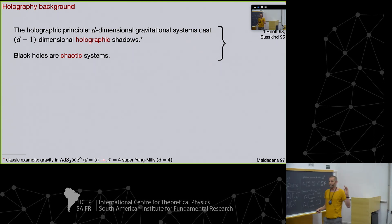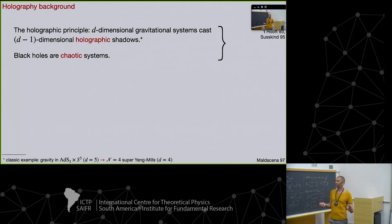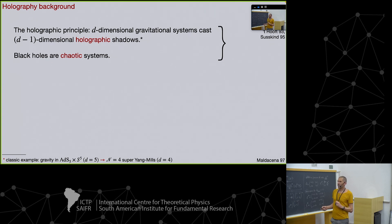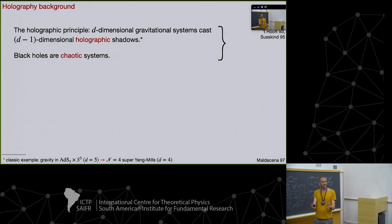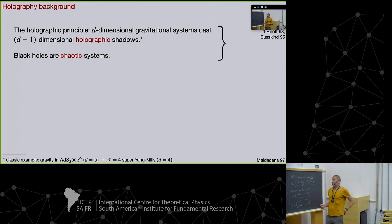Maldacena in 1997 introduced a worked example, where the gravitational theory was living in the product of a five-dimensional ADS-5 space and a five-dimensional sphere, and the corresponding boundary partner was a super Yang-Mills theory with N=4 supersymmetry in four dimensions. The correspondence has been made quite concrete on the level of correlation functions, but it's complicated. This motivated Kitaev in 2015 to ask if we can construct something much more simple — a simpler version of such a holographic correspondence — ideally one of an equal level of explicitness.